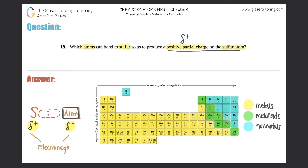These partial charge symbols come directly from electronegativity. Electronegativity is basically an atom's attraction toward electrons in a bond — the higher the electronegativity (EN), the more attracted it is, and the more it's going to pull the electrons toward itself. So higher electronegativity means higher attraction for electrons.